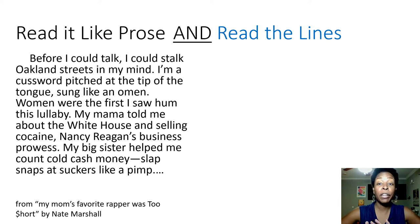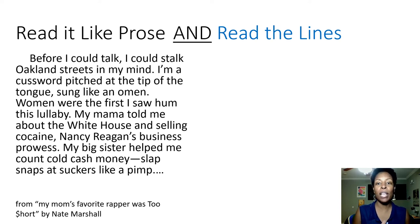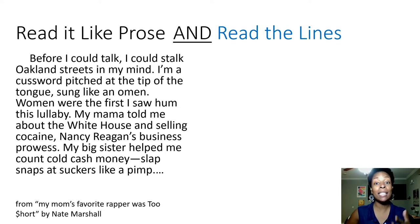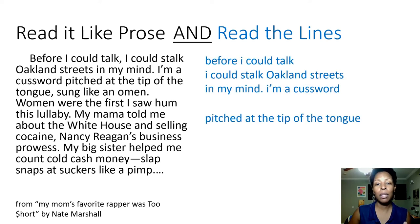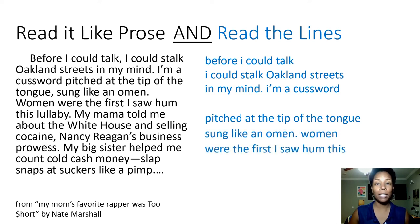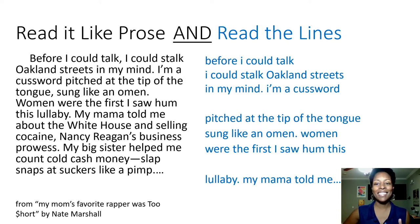To get the most out of reading a poem, read it at least two different ways. Read as much of it as you can straight through, as if it were prose — kind of like the version on the left. Stop only for punctuation marks or where it seems like you've reached the end of the sentence. But also read each line to see what it means on its own — pause wherever there's white space. This kind of reading will also help you see subtler rhymes and rhythms, such as 'talk' and 'stalk,' 'pitched' and 'tip,' 'omen' and 'women' in this poem.